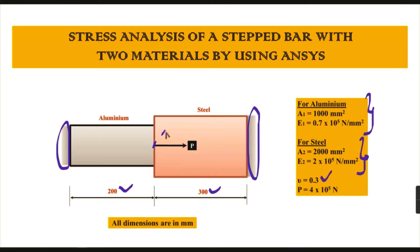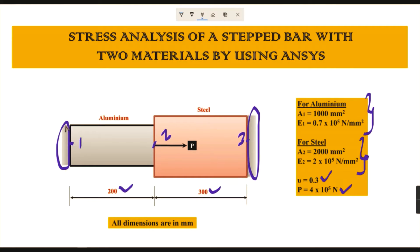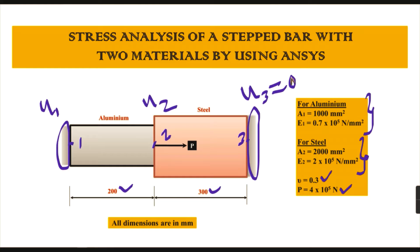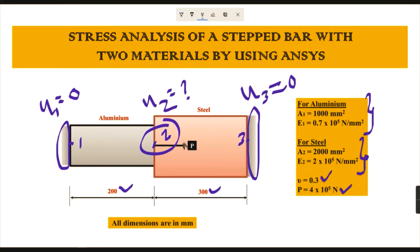The nodal point numbering: node 1 on the left, node 2 at the center interface, and node 3 on the right. At node 2, the load is acting in the x-direction as 4×10⁵ N. Since both left and right ends are fixed, the displacements u1 and u3 are both zero. We need to find the displacement at node 2, along with the reaction forces and stresses in this stepped bar. All dimensions are in millimeters.